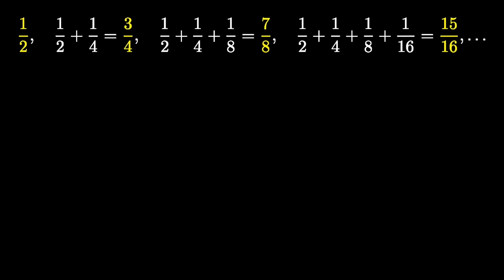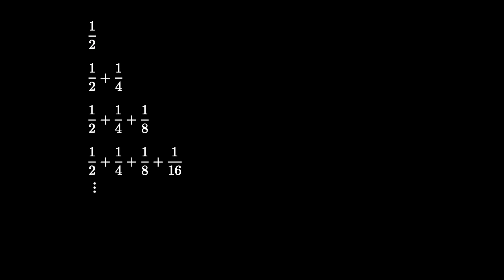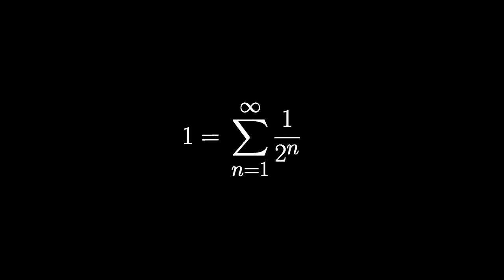That is, each number is naturally written as a slightly longer sum with one more power of two in it. As such, you're tempted to say that if these numbers approach anything, we should be able to write this thing down as a sum that contains the reciprocal of every power of two. On the other hand, we can see geometrically that these numbers approach one, so what you want to say is that one and some kind of infinite sum are the same thing.